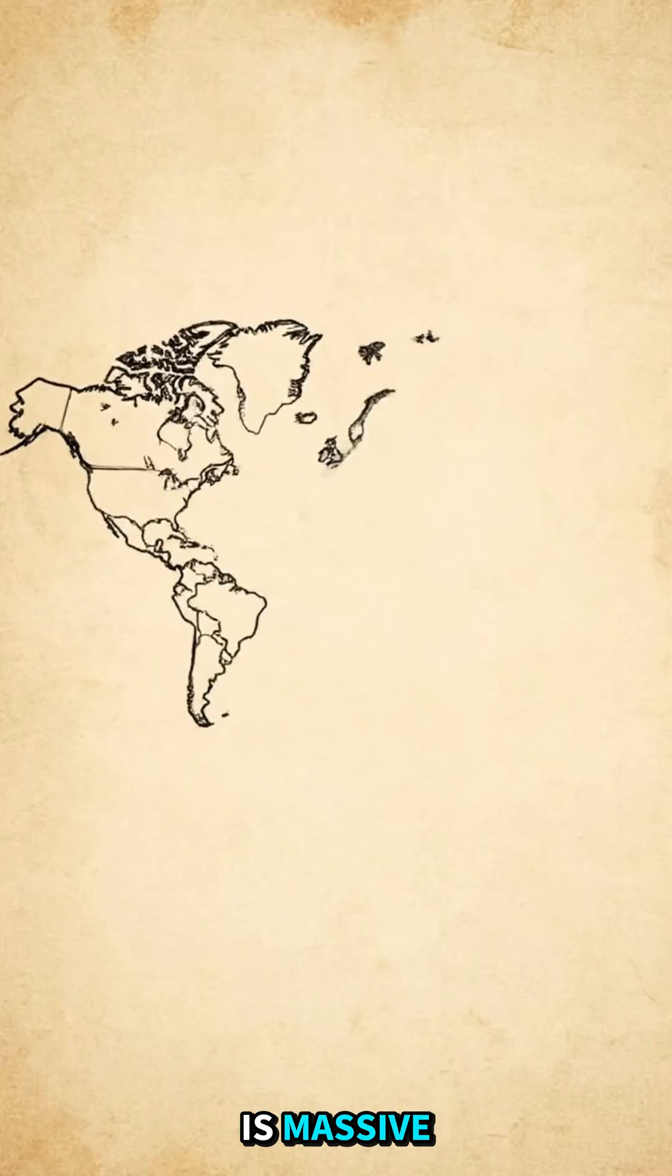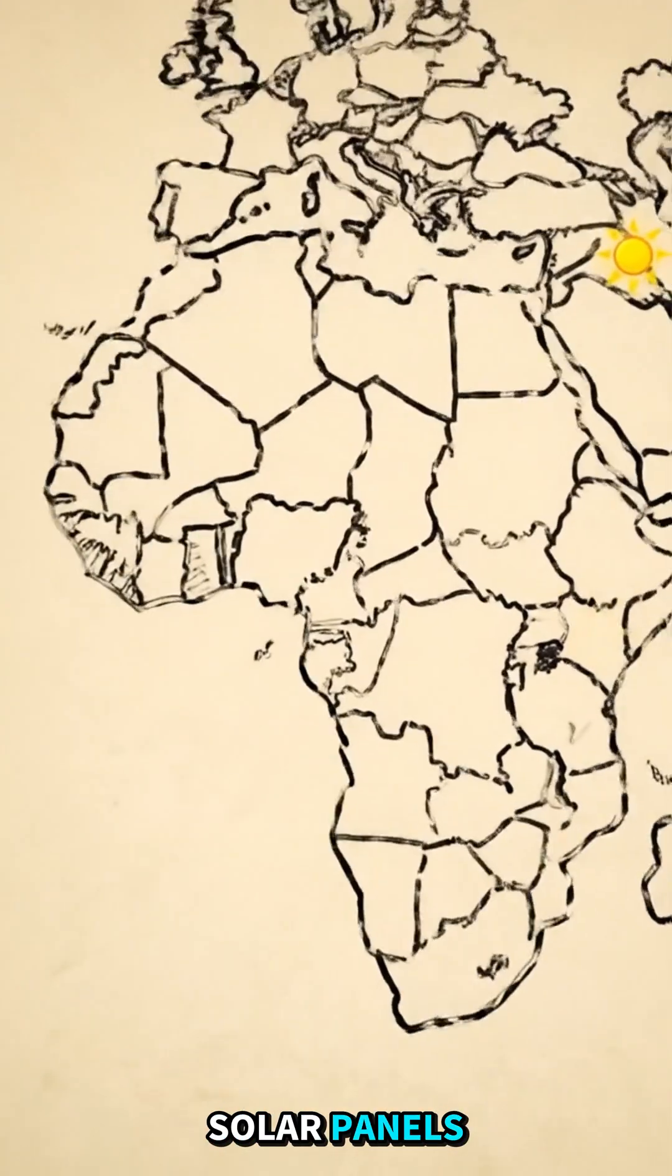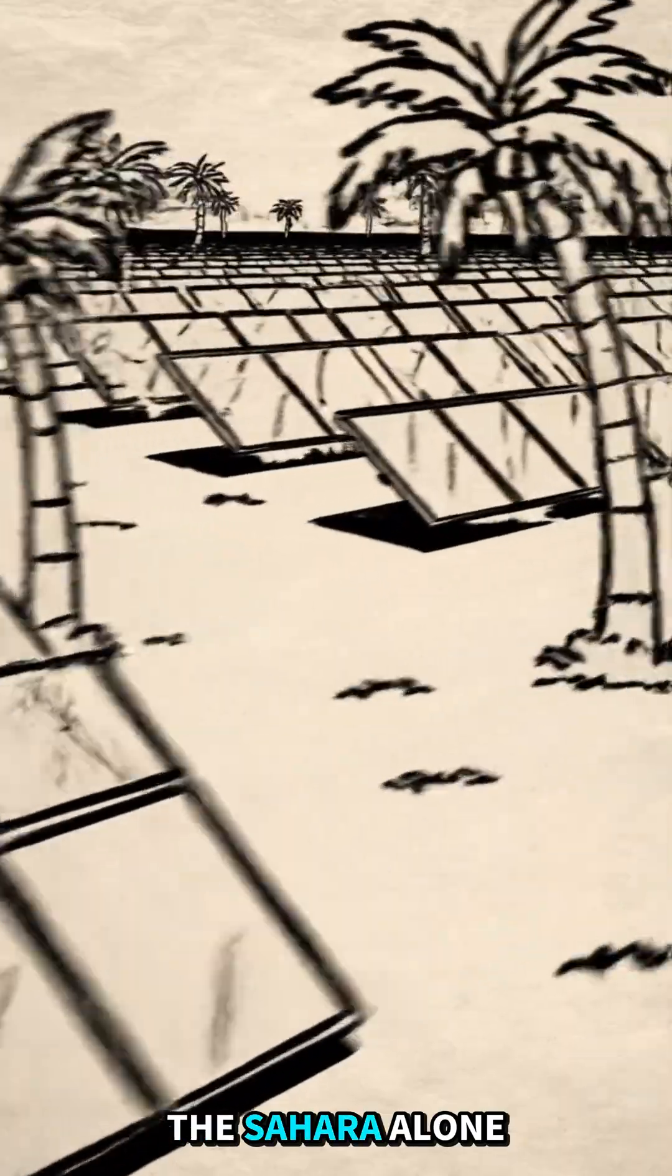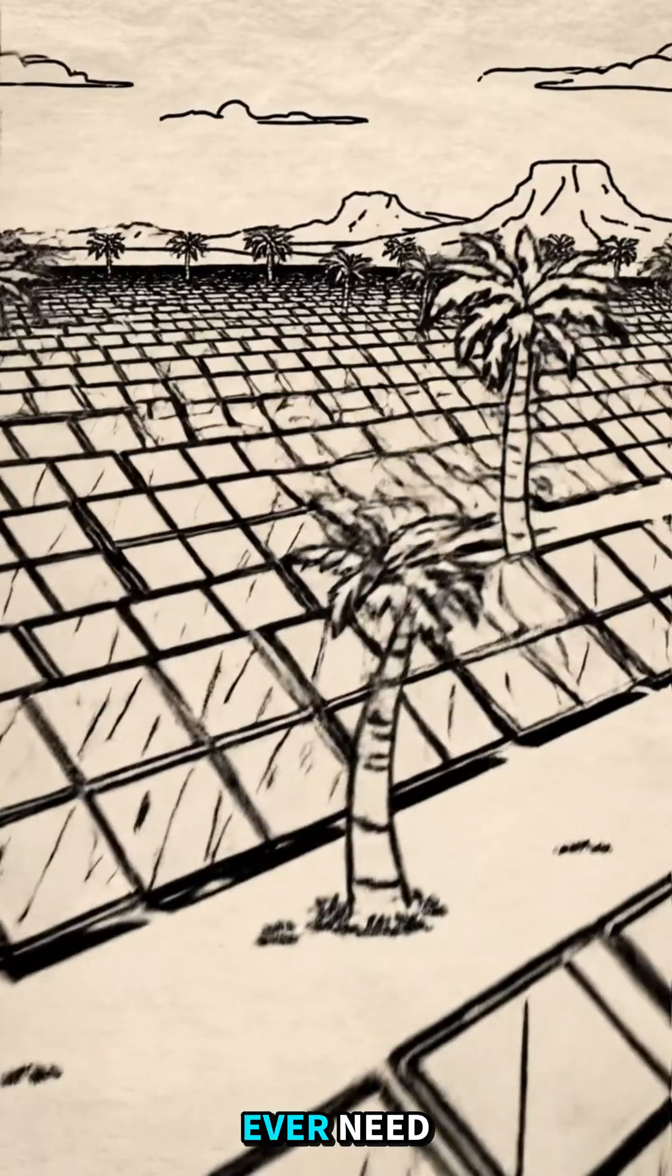Still, the potential is massive. If we covered part of the world's deserts with solar panels, we could make enough power for everyone. The Sahara alone is over 3 million square miles, far more than we'd ever need.